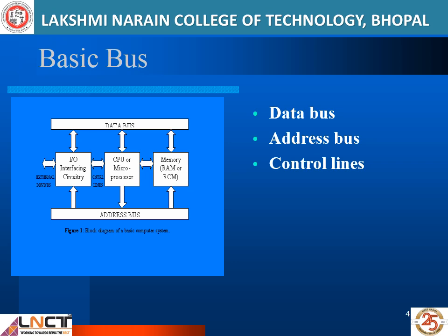The three types are: data bus, address bus, and control bus. A bus is a common pathway through which information flows from one computer component to another. This path is used for communication purposes and is established between two or more computer components where data can be transmitted.